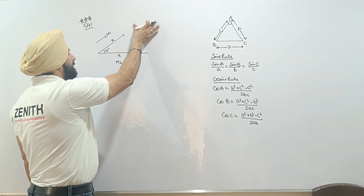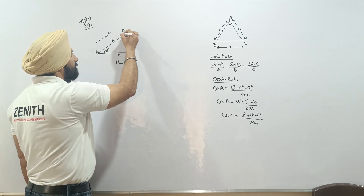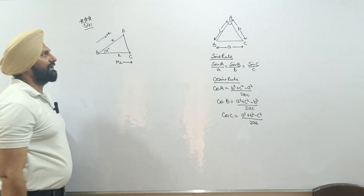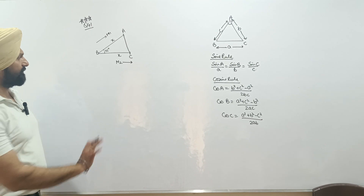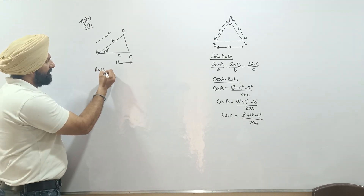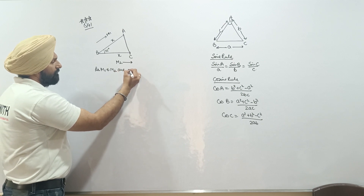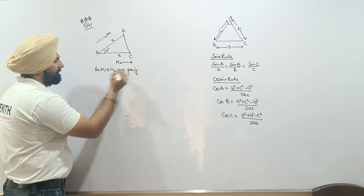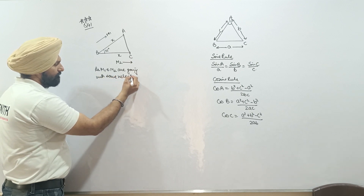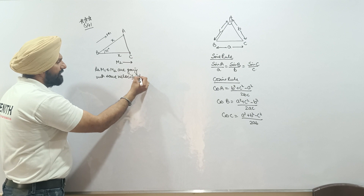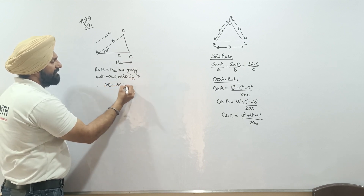Let this point be A, B, and C. If we join them, we form a triangle. The two persons M1 and M2 are going with the same velocities v, therefore AB is equal to BC is equal to x.